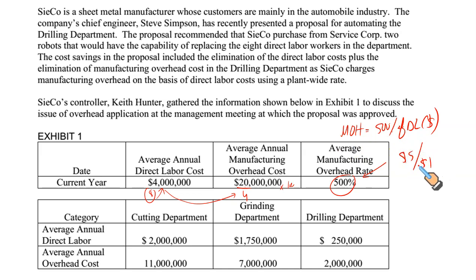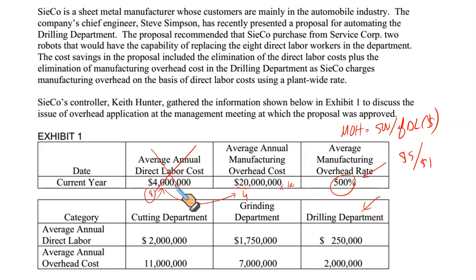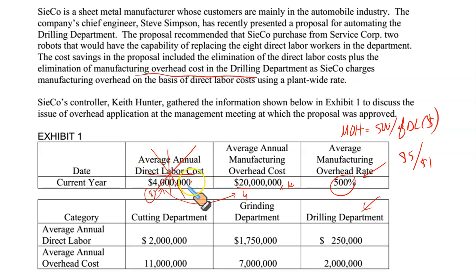They believe that since the labor cost is being eliminated in the drilling department, the base is gone, so the overhead is gone as well. Well, that's quite naive. How can overhead cost be eliminated? You are just automating your production system — it doesn't mean overhead cost is going away.